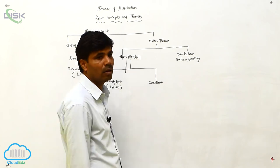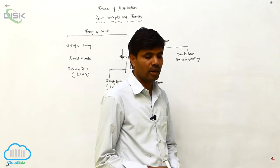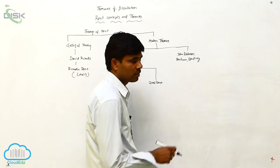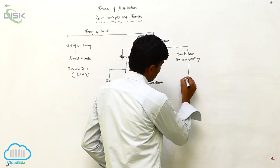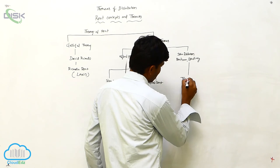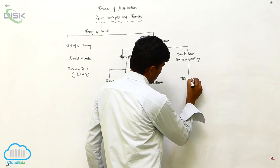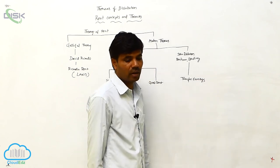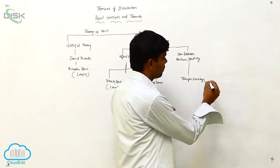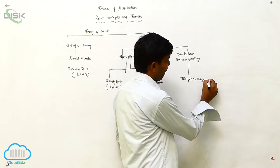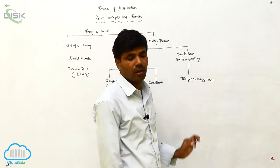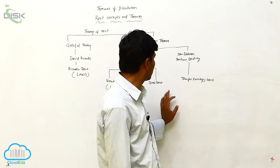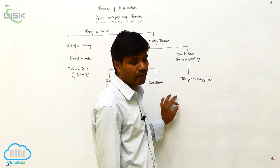John Robinson, Benham, and Balding explain the concept of transfer earnings. These are the types of rent explained by different economists.